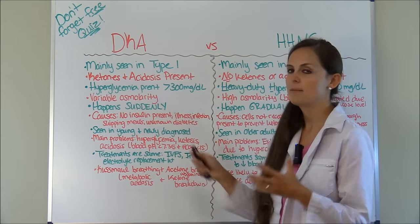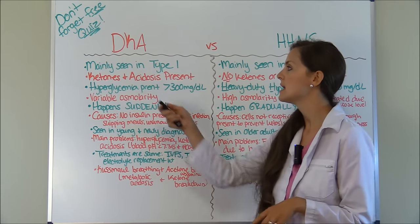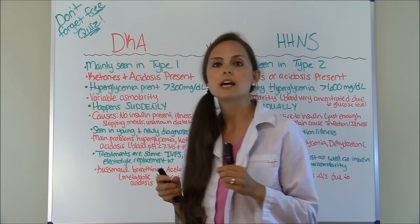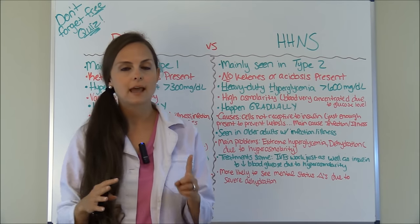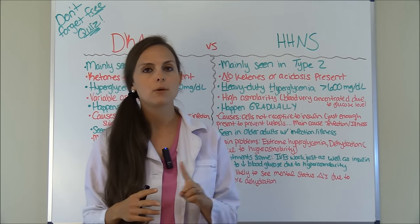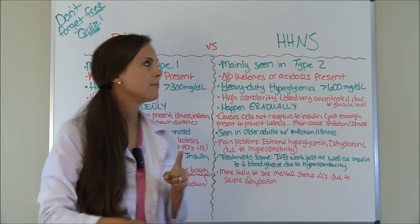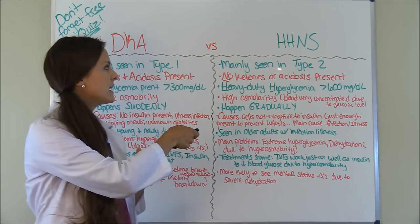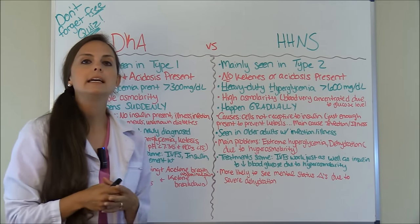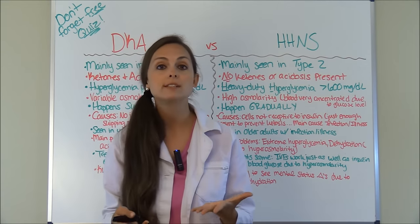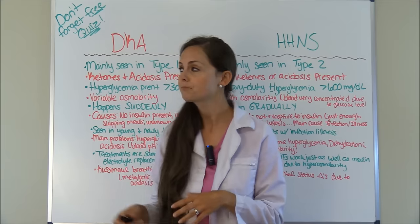DKA — diabetic ketoacidosis — is mainly seen in your type 1 diabetics. It can be seen in type 2, but it's primarily type 1, so remember that. HHNS is mainly seen in type 2 diabetics.